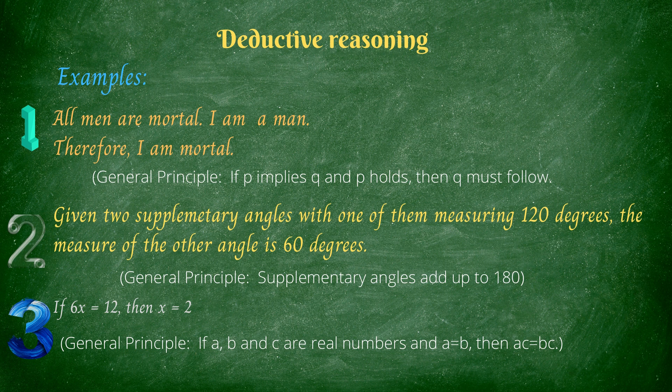Number three: if 6x equals 12, then x equals 2. The general principle is if A, B, and C are real numbers, and A equals B, then AC equals BC.